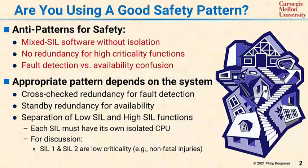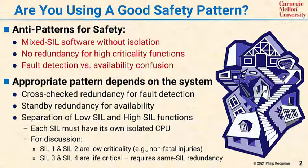For this discussion, we're going to assume that SIL 1 and SIL 2 are low criticality. SIL 1, for example, might involve minor injuries, and SIL 2 would involve major but not fatal injuries. On the other hand, SIL 3 and SIL 4 are high SIL systems with life critical applications. In SIL 3, it is possible that someone will be killed or very severely injured, and at SIL 4, it's basically a catastrophic loss.